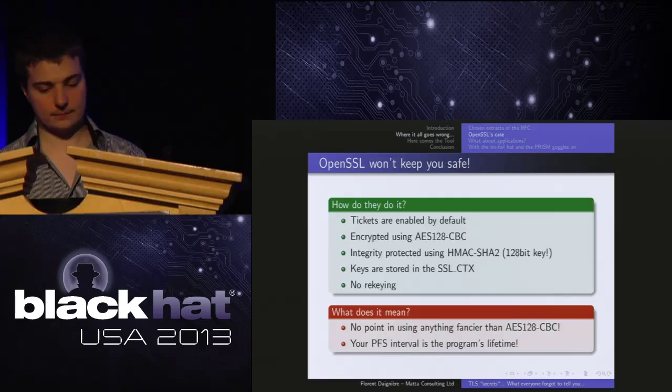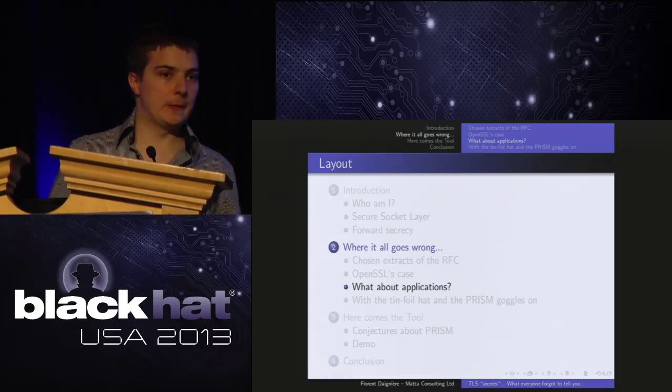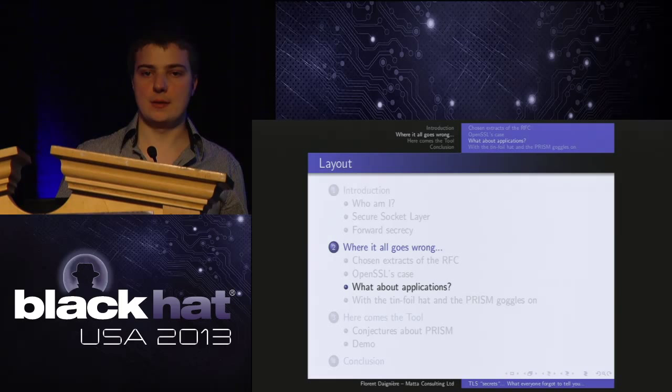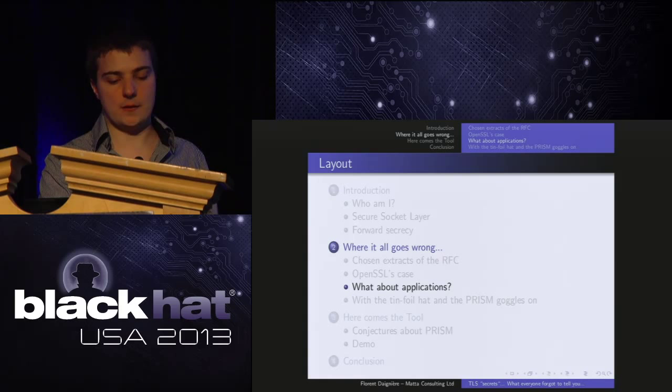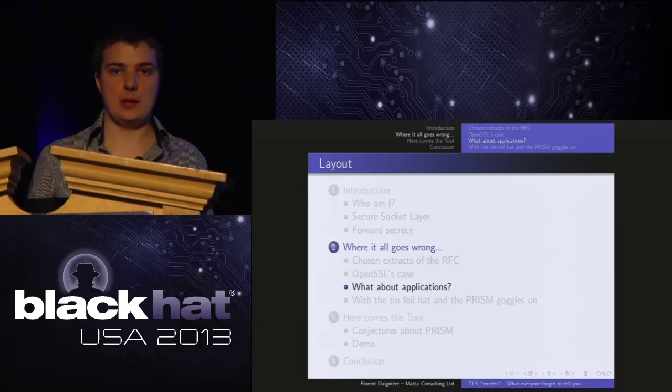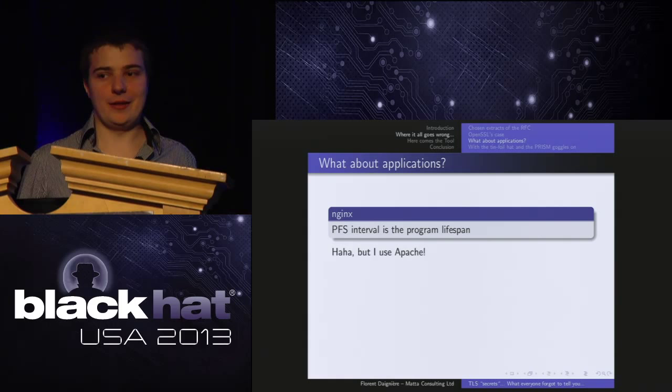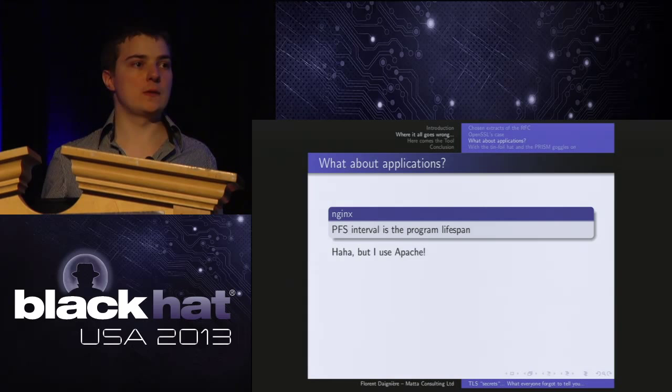So far I've been talking about the standard and its implementation in libraries. But libraries are just part of it — it's up to the applications to fix that. Let's look at the applications. I've heard that all the cool kids use NGINX, so I started looking at NGINX. Guess what? They don't do anything special — they use the default OpenSSL behavior, which is the broken behavior I've just talked about.